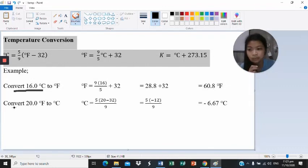Next is convert 20 degrees Fahrenheit to Celsius. First, we need to subtract 32 from 20. So 20 minus 32, the answer is negative 12. Then we will multiply by 5 and divide it by 9. The answer will be negative 6.67 degrees Celsius. That is how you convert temperature.